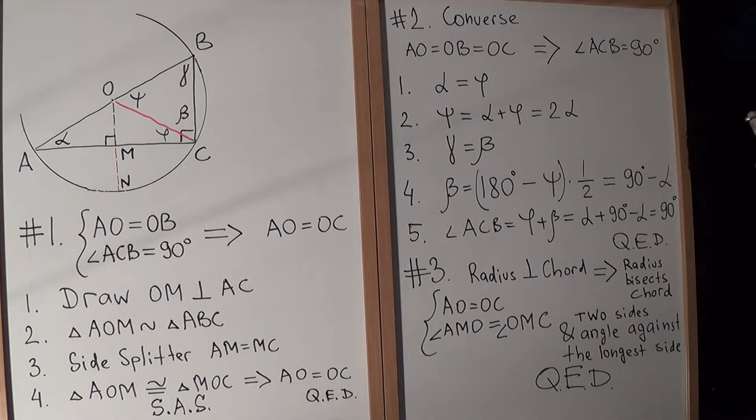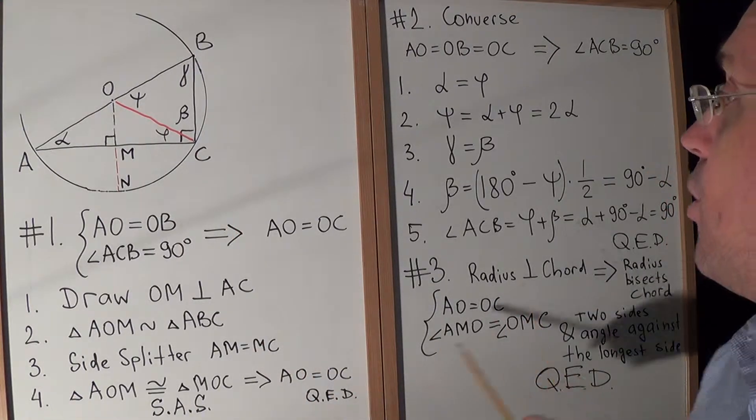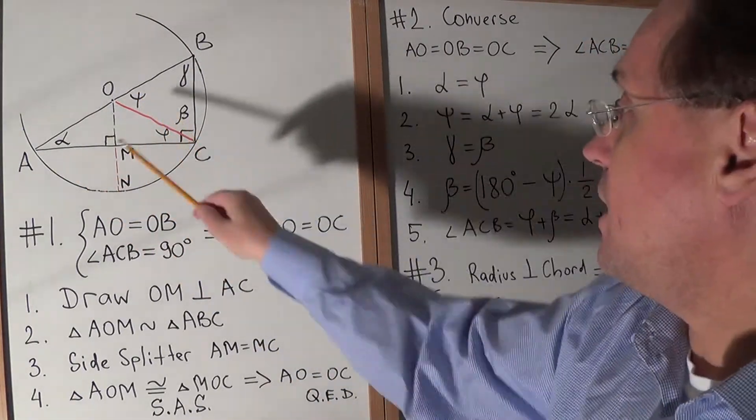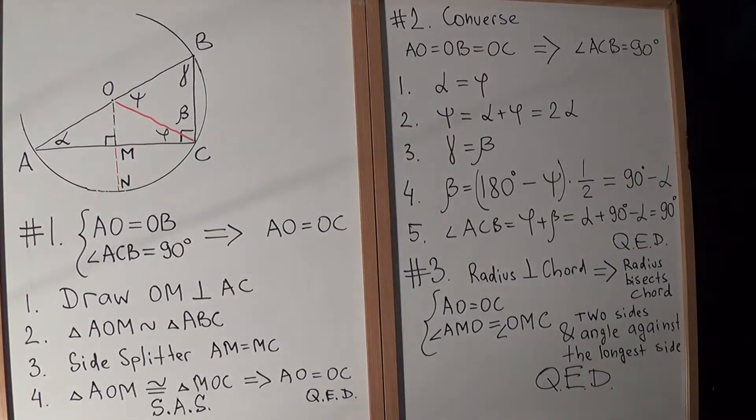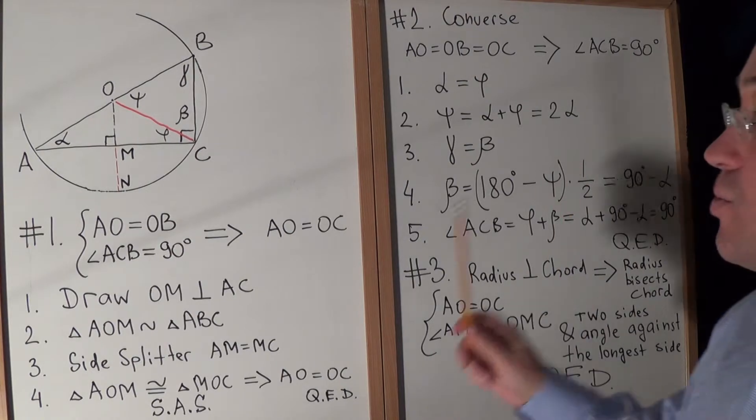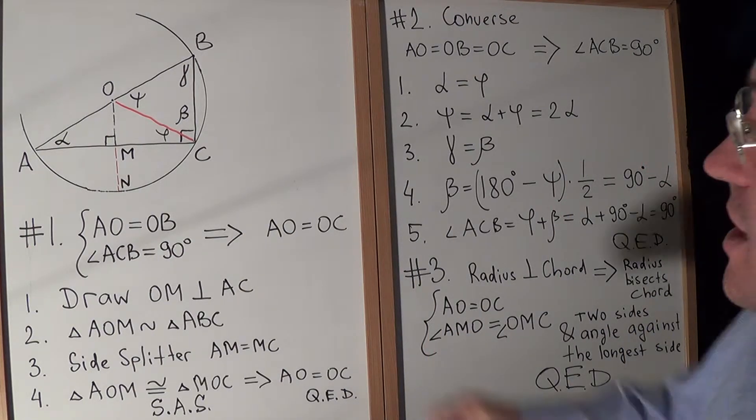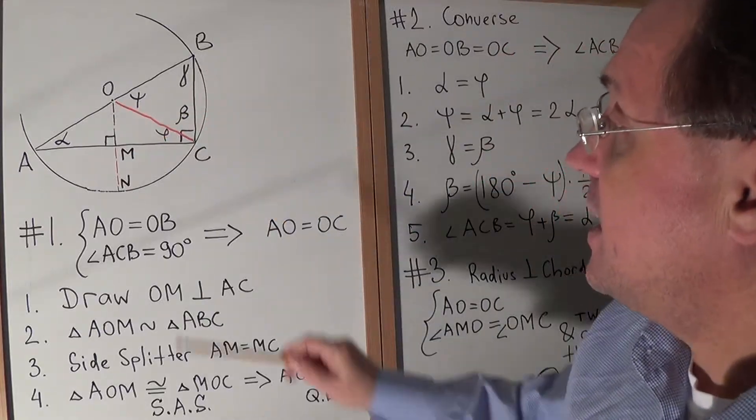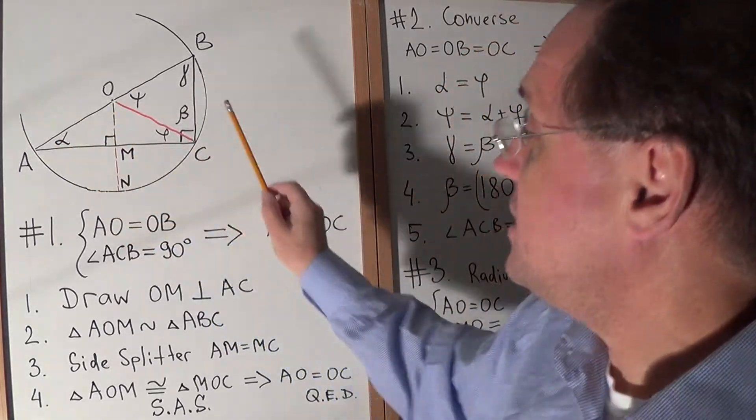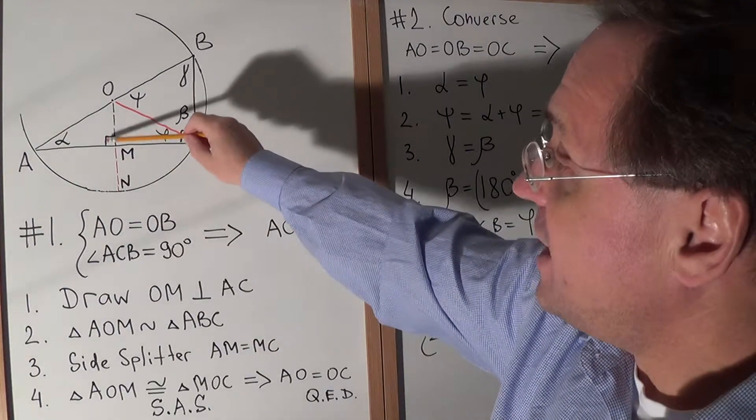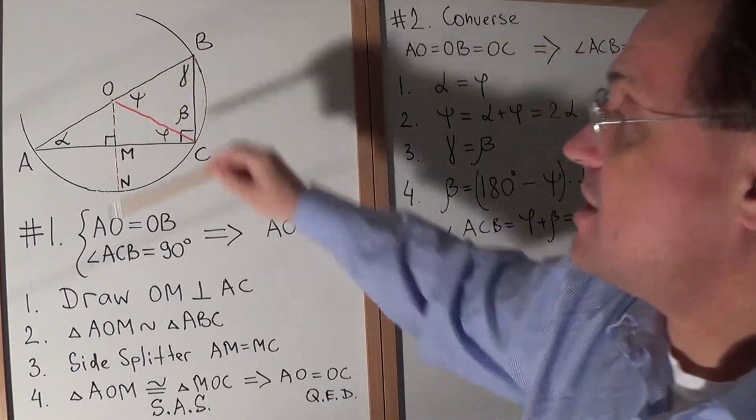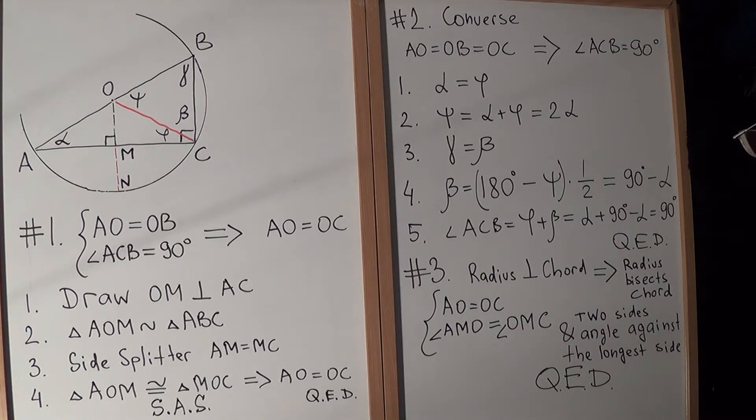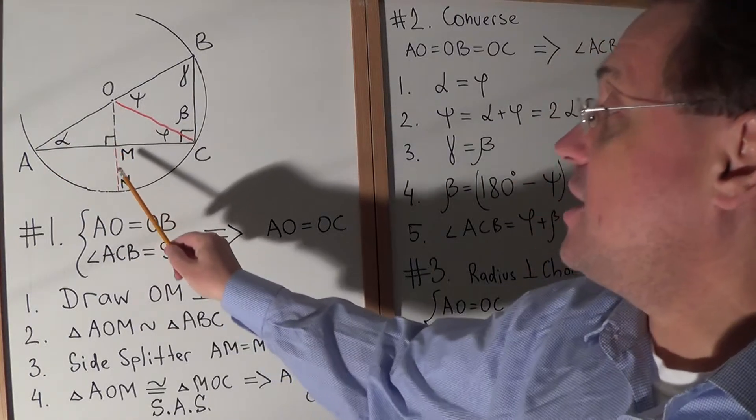AO equals OC, they are radii. Angle AMO equals angle OMC, these are right angles, this is given. Now we can see that we have two sides, an angle against the longest side. This is one of our postulates: two sides, one side this mutual, another side is radius AO, OC in our case, and the right angle is against the longest side. So these two triangles are congruent, and therefore AM equals MC.